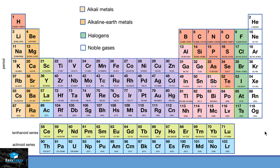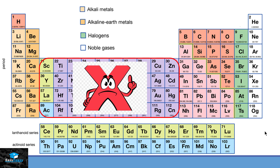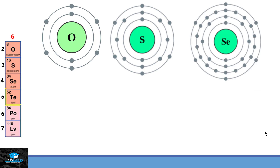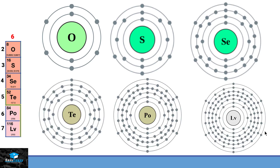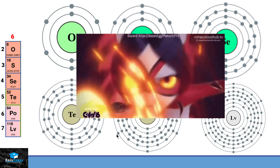There is another unique way to get more information from these groups. If we ignore the transition elements and start renumbering the groups, we get groups 1 through 8. The new group numbers also represent the number of electrons present in their valence shell. For example, what was group 16 before is now group 6, and as you can see in all the elements of that group, the valence shell has 6 electrons. Memorizing this will help you understand the reactivity of all these elements.